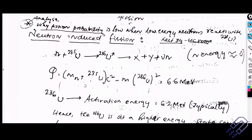Why fission probability? We cannot really predict that after fission happens, for uranium, we will get barium or krypton — that's not fixed, it's probabilistic in nature. The probability of getting barium and krypton is higher, that's why we get barium. But there are other possibilities as well, which we are going to look into now.